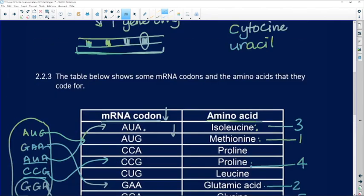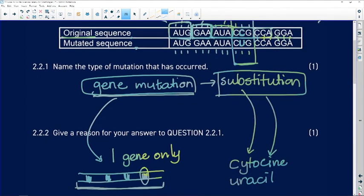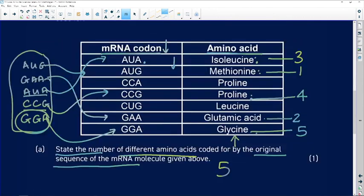There's another way to work that out. You know that a triplet code is going to code for one amino acid. The next triplet is going to code for another amino acid. So you could have answered this question very simply by counting up the number of triplet codes. And in that way, you're going to see how many amino acids you have.